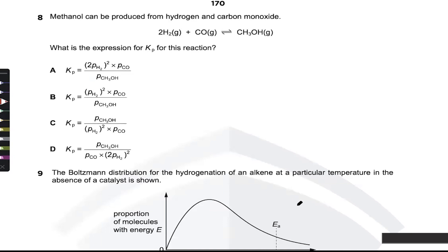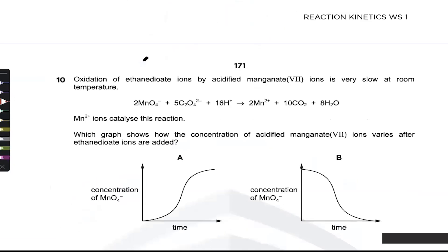For methanol produced from hydrogen and carbon monoxide, the Kp expression is C. The square on hydrogen is important, and reactants go in the denominator with products in the numerator.